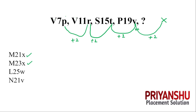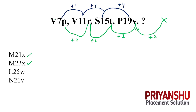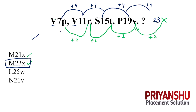Now focusing on the numbers: 19, 15 — difference of 4; 15 to 11 — plus 4; 11 to 7 — plus 4. So the next number follows plus 4 pattern: 19 plus 4 is 23. We have only one option with 23 and X. So the correct answer is M23X. Let us move to the next question.